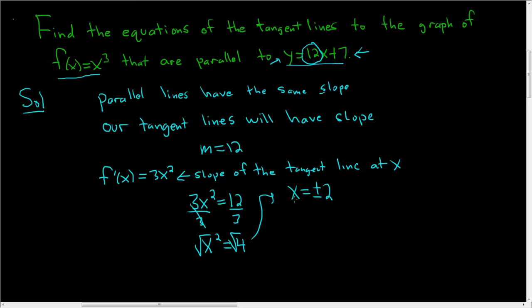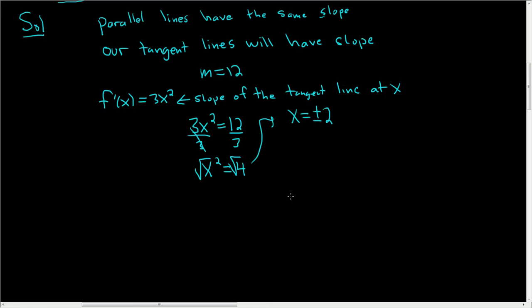So let me write down f(x) again so you can see it. First, the case when x = 2. When x = 2, the y value is f(2) = 2³ = 8. So our point for our first tangent line will be (2, 8).